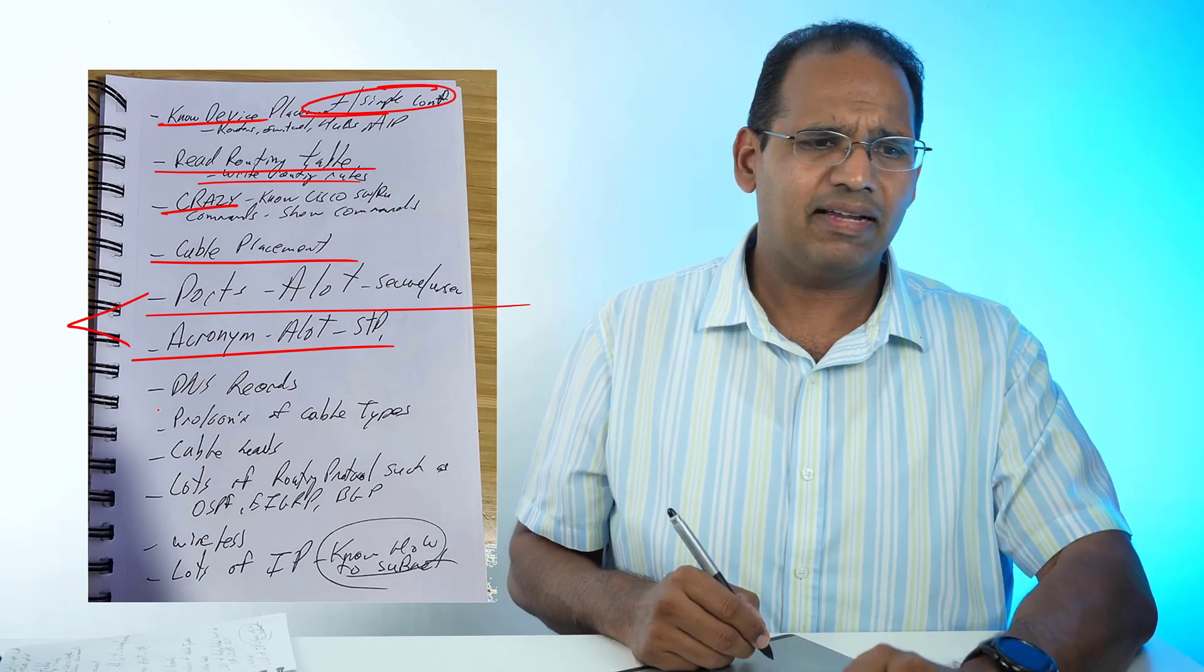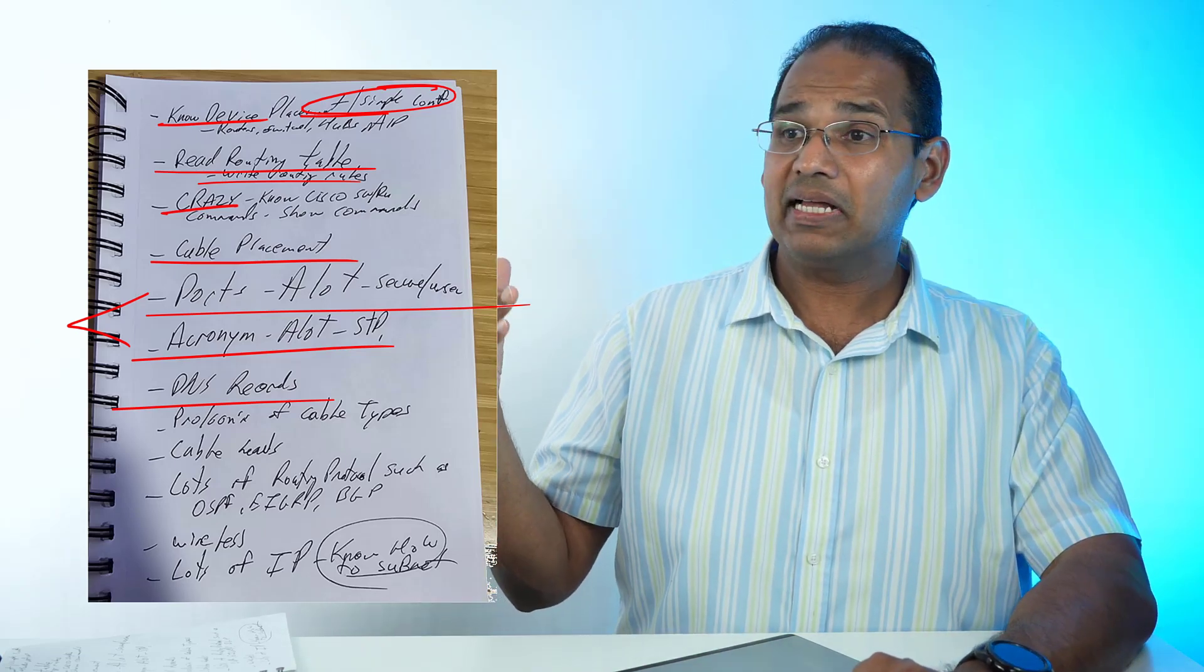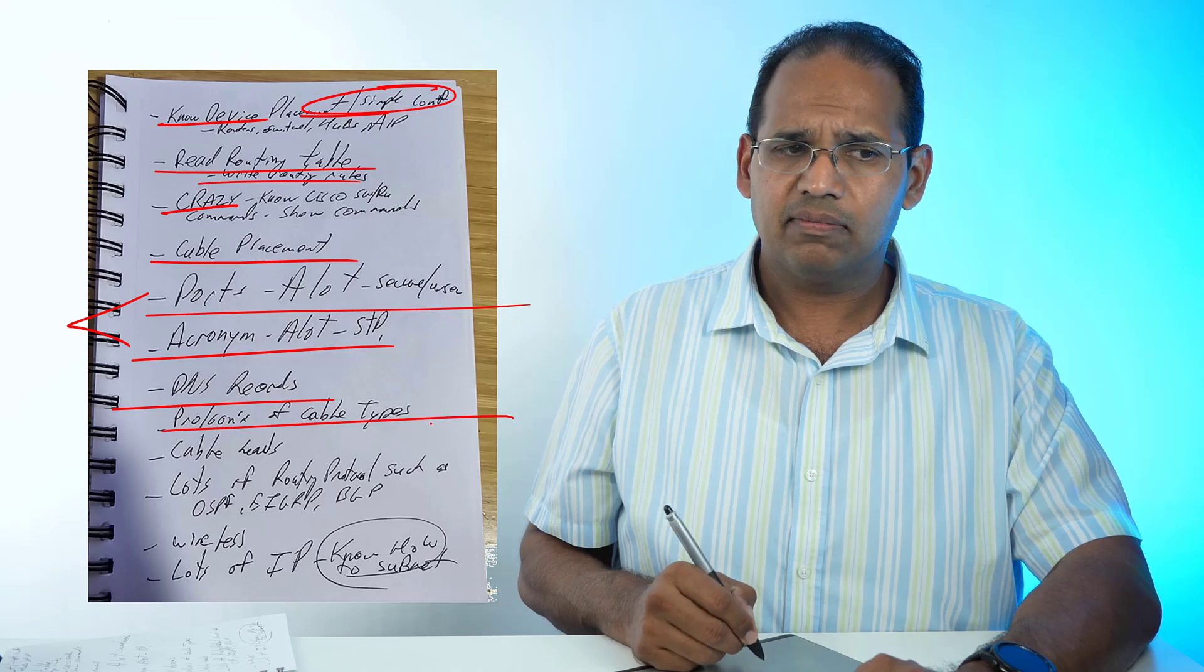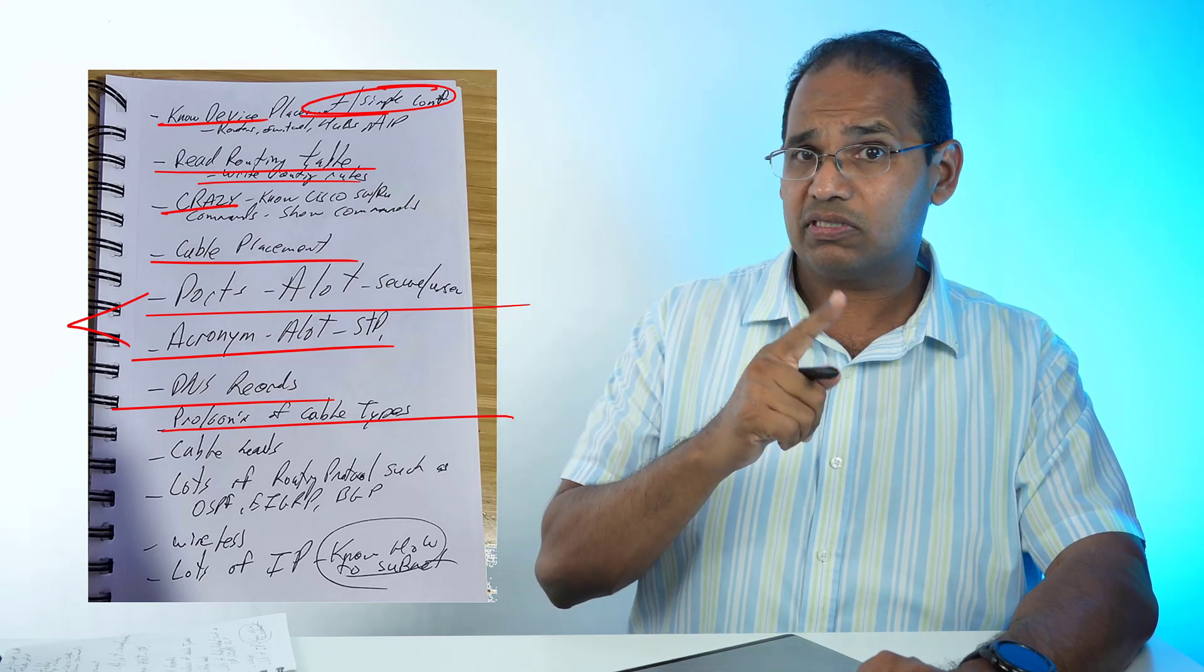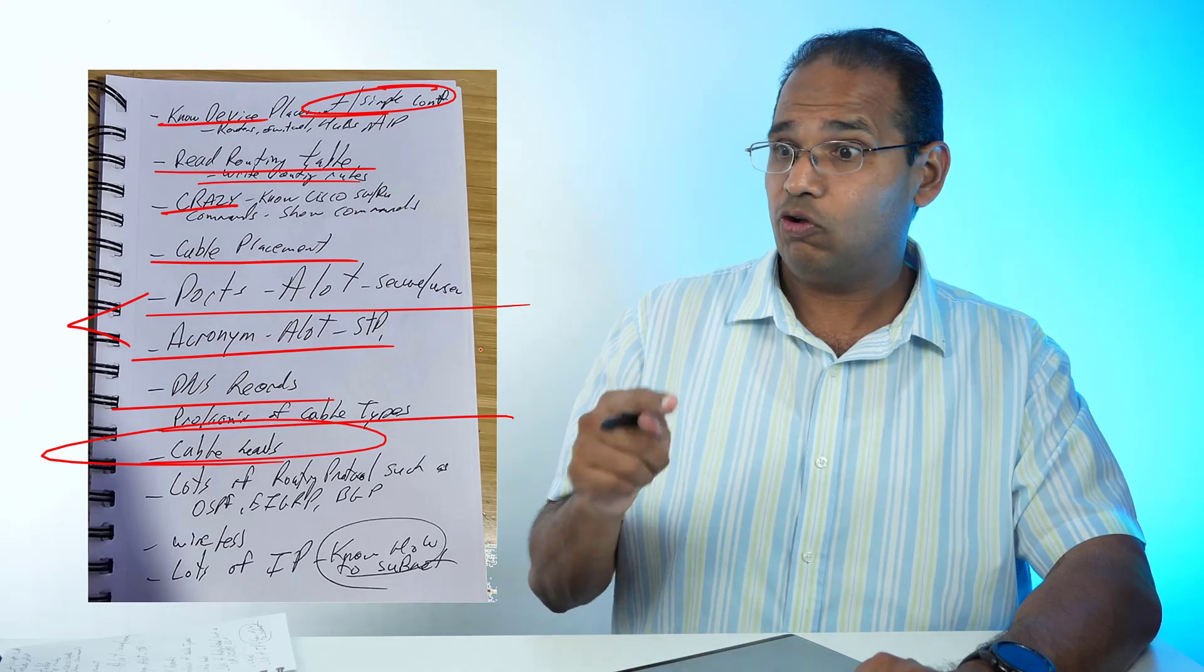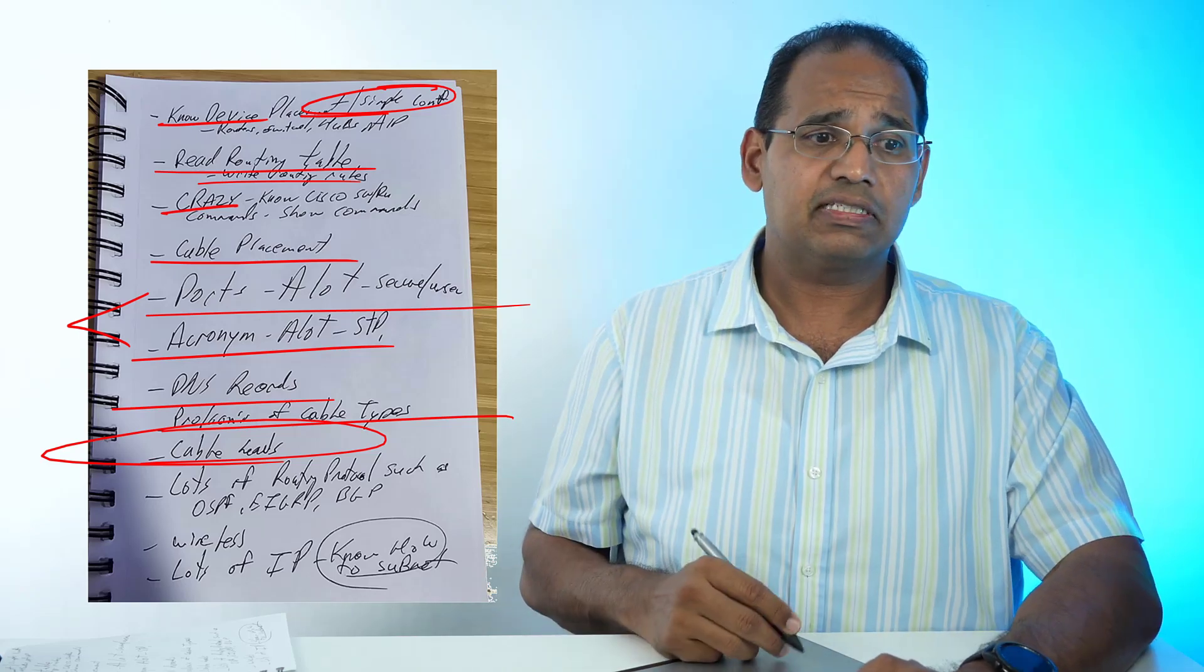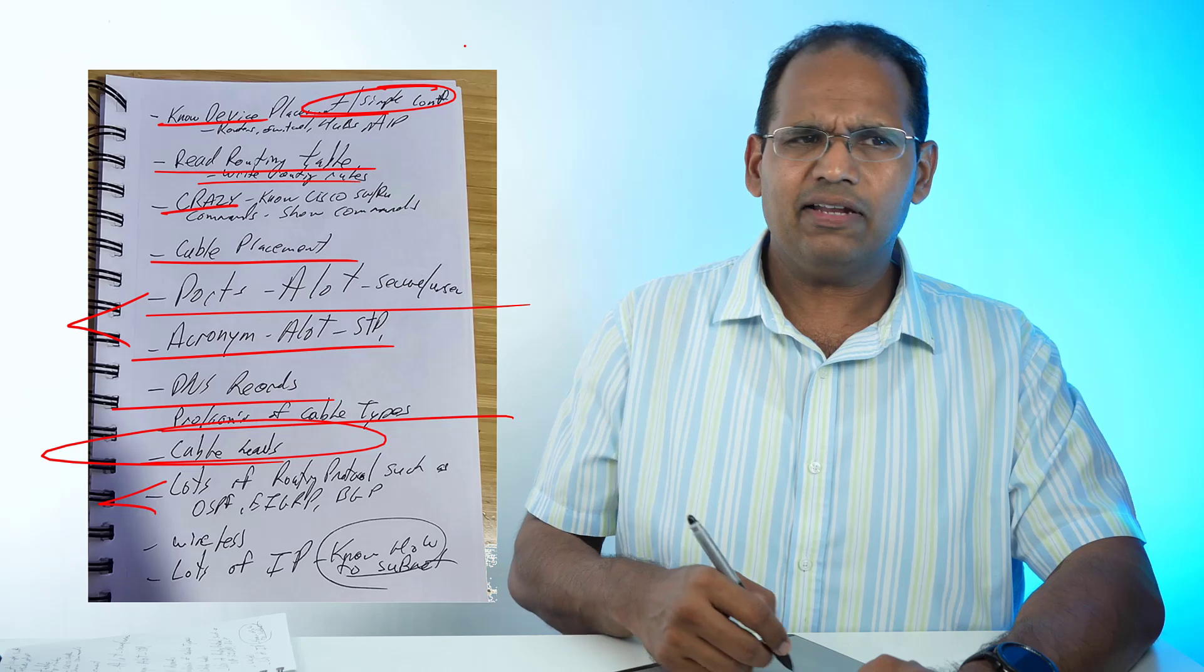A couple things I remembered: DNS records—what are CNAME, what are MX records? If you're securing a mail server, what type of record is that? It's a TXT record. You need to know those. Pros and cons of cable types—when would you use fiber over twisted pair? Cable heads—what type of head belongs on what cable? Is it a B&C connector, an SC connector, or an RJ45?